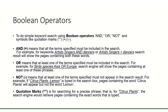NOT means that at least one of the terms specified must not appear in the search result. For example, if citrus plants hyphen lemon is typed in the search box, pages containing the words citrus plants will appear but not the word lemon. Quotation marks is for searching for a precise phrase.